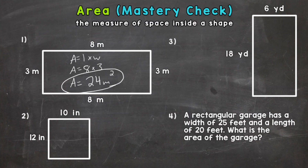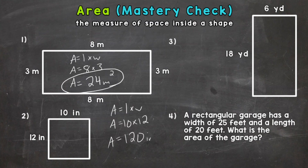Number two: area equals length times width. Plugging in a length of 10 times a width of 12, we have an area of 120 square inches.